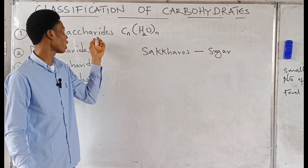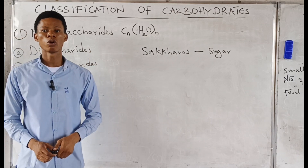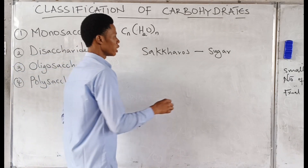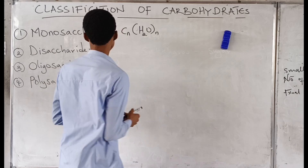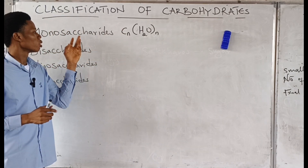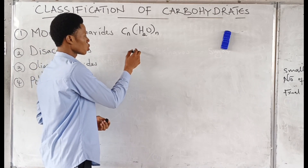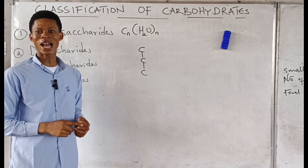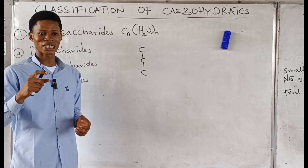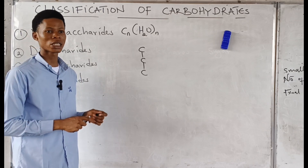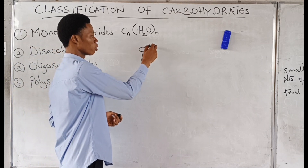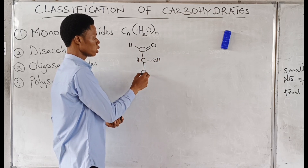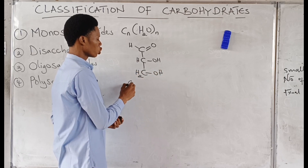Monosaccharides have one sugar unit. The simplest monosaccharides we have are glyceraldehyde and dihydroxyacetone. Glyceraldehyde contains an aldehyde functional group — from the word glyceraldehyde, you know it contains an aldehyde functional group. The carbonyl carbon is always at the terminal. Carbohydrates are polyhydroxy aldehydes; this is the structure of glyceraldehyde.